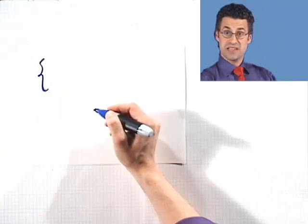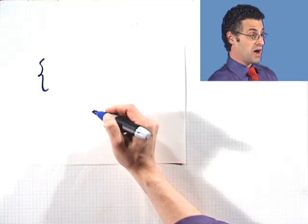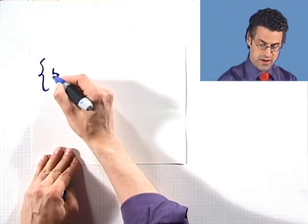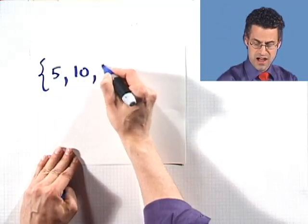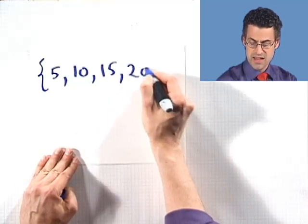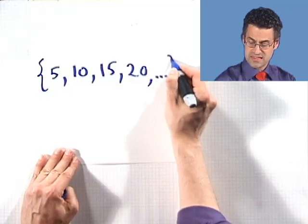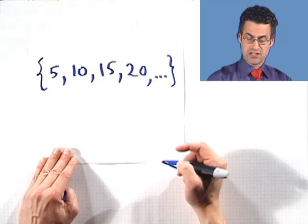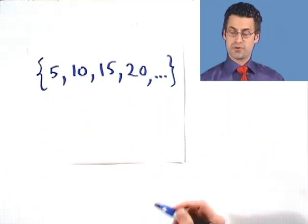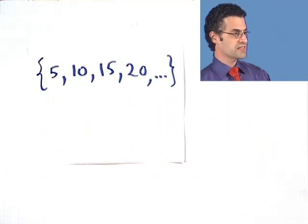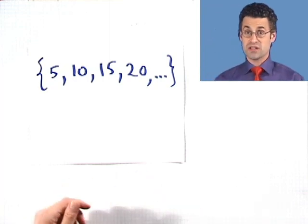So let's express in roster notation all the positive multiples of 5. That means that we're going to use that sort of set notation using those curly brackets, but now I'm just going to list, like a roster, all the positive multiples of 5. So they're going to be 5, 10, 15, 20. Now that list goes on forever, so I'll indicate that with three little dots here, and then I close it, and that set actually represents the positive multiples of 5 in roster notation.